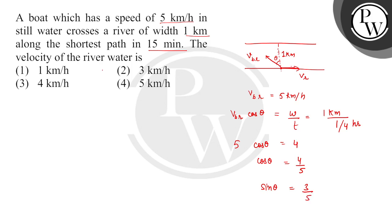Now what we need to find is velocity of river water. v_r value will be equal to v_b,r sin theta. v_b,r value is 5.